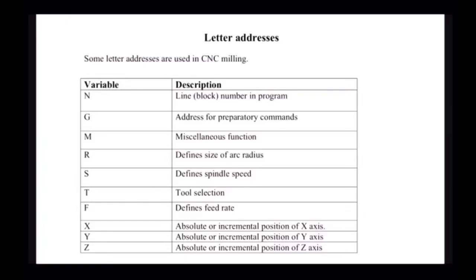Let us understand first of all why we need to learn about G-code. G-code is mainly used for any kind of CNC machine. CNC stands for Computerized Numerical Control. Any kind of machine that is computer controlled would require G-codes. The commands that you usually do manually, we want the computer to tell the machine to do — the computer tells the machine by using something called G-code. We will see what are the main G-codes typically used in CNC machining.